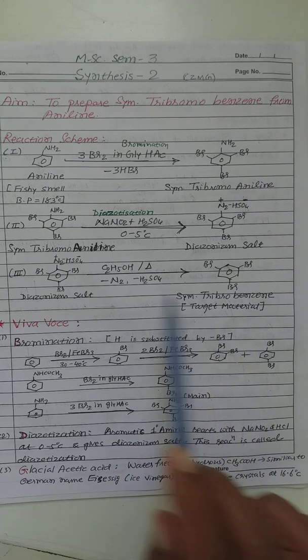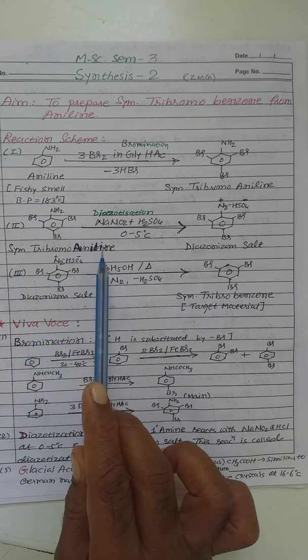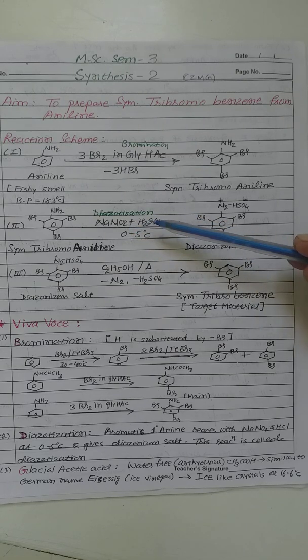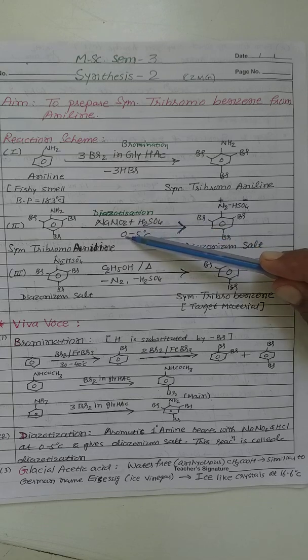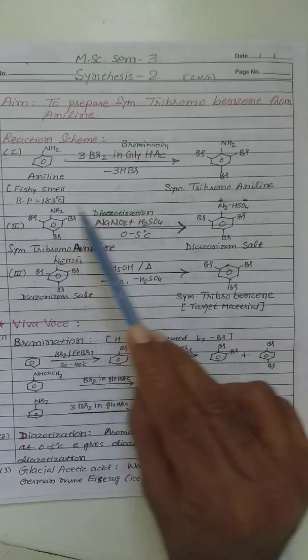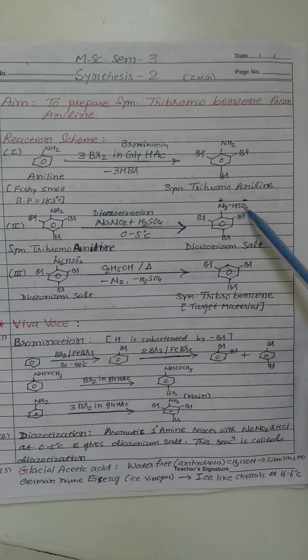In second step chemical reaction, symmetrical tri-bromoaniline undergoes a diazotization chemical reaction in the presence of NaNO2 and H2SO4 or HCl at 0 to 5 degree celsius temperature and we will get a diazonium salt as an intermediate. NH2 group which is converted into N2 plus HSO4 minus.